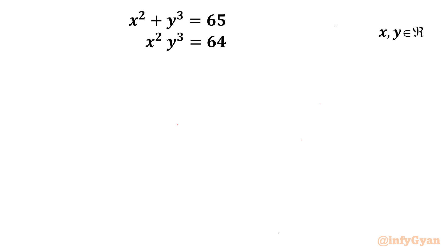Welcome back to InfiGam, my dear friends. Today in this video we are going to take up one very interesting system of equations for real values of x and y. The equations are x squared plus y cubed equal to 65, and x squared times y cubed equal to 64. I will solve this question in four different ways. Let me begin with method number one.